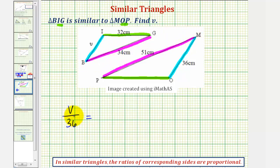Notice how this ratio compares the length of the small triangle to the large triangle. So our next ratio must again compare the small triangle to the large triangle. So the second ratio would be 34 centimeters to 51 centimeters.